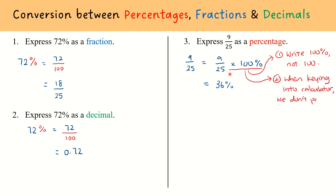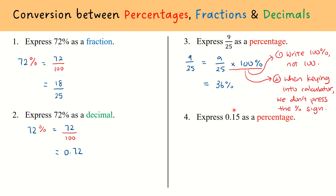When keying into the calculator, as mentioned, we don't press the percentage sign — so to get 36 we only press 9 over 25 times 100, and the percentage sign remains in our eventual answer. To illustrate another example, to express 0.15 as a percentage: 0.15 equals 0.15 times 100%. When we click into our calculator, we only press 0.15 times 100, giving us the value 15, so 0.15 equals 15%.